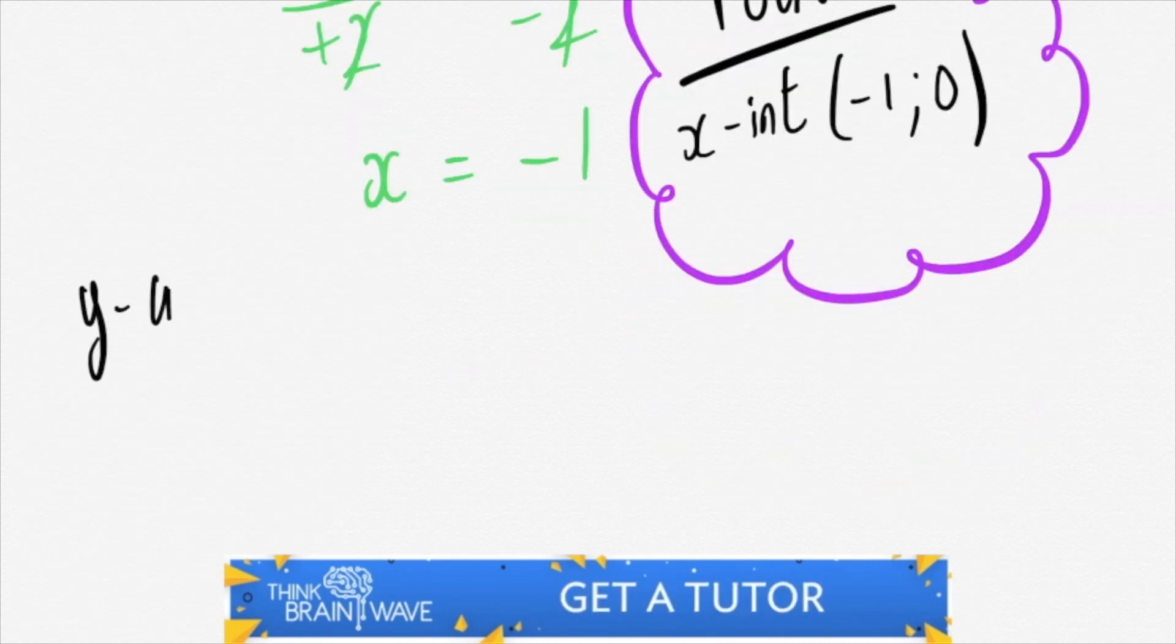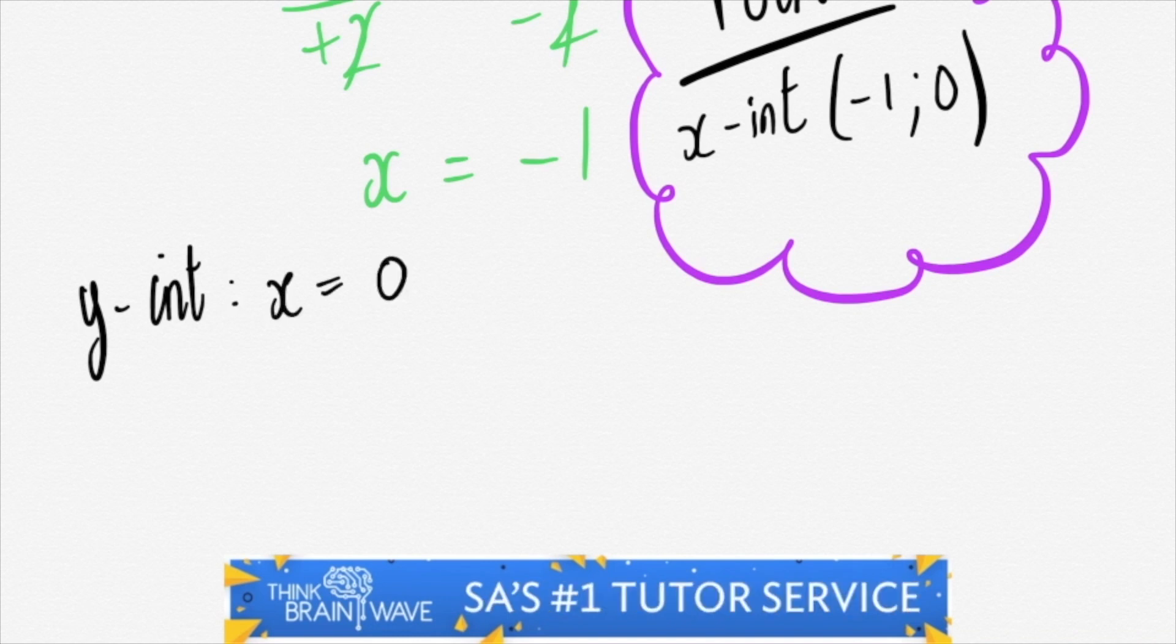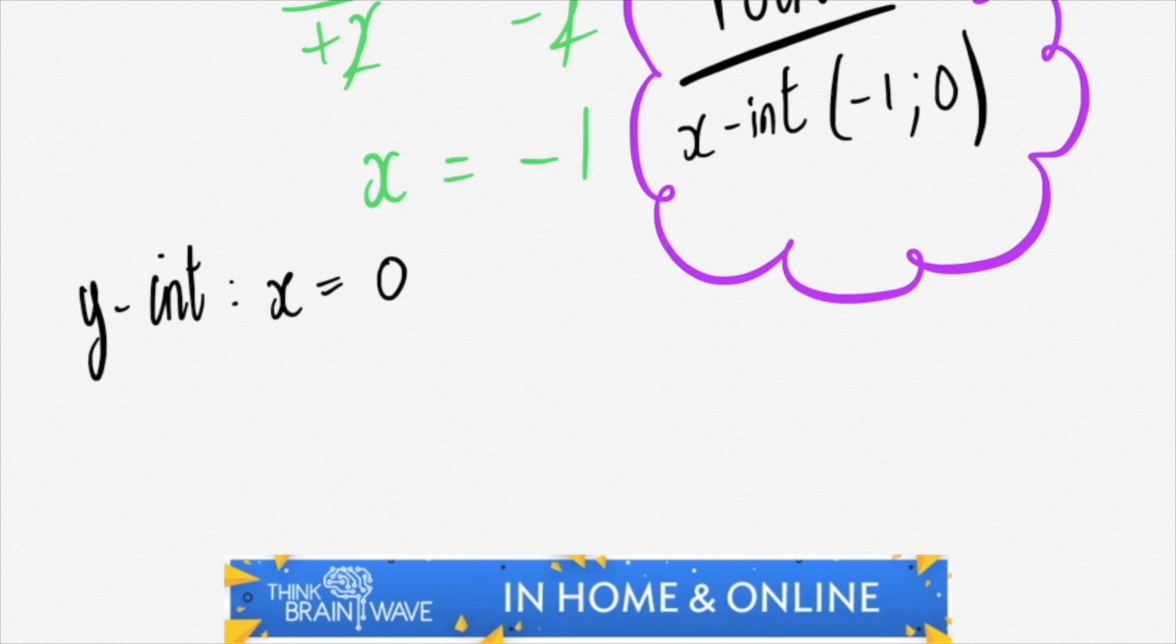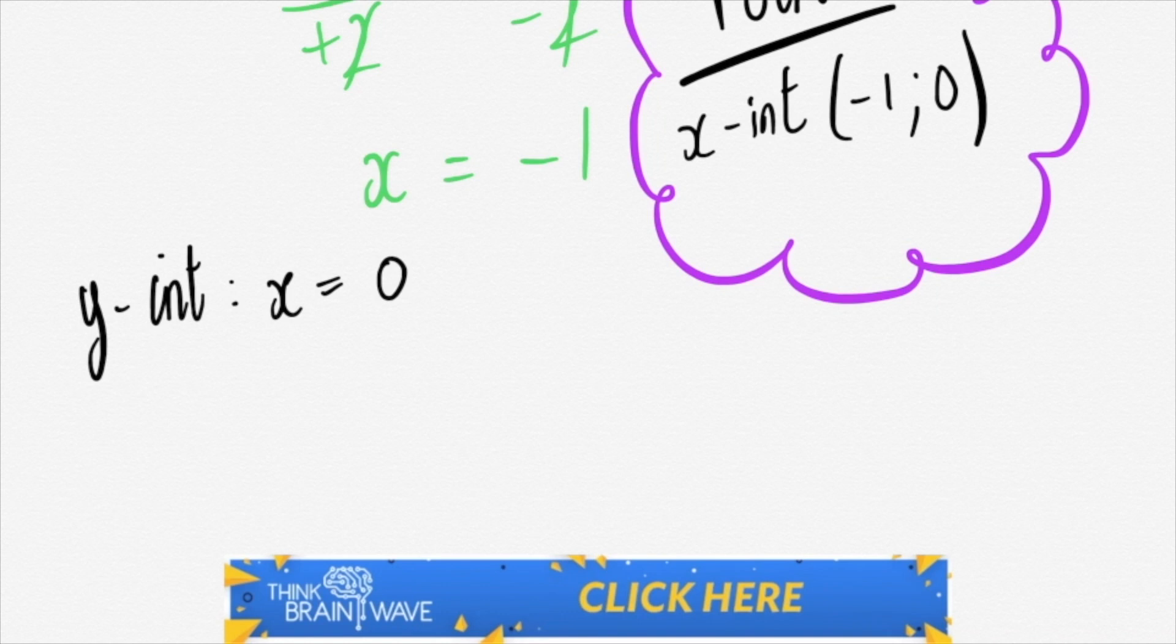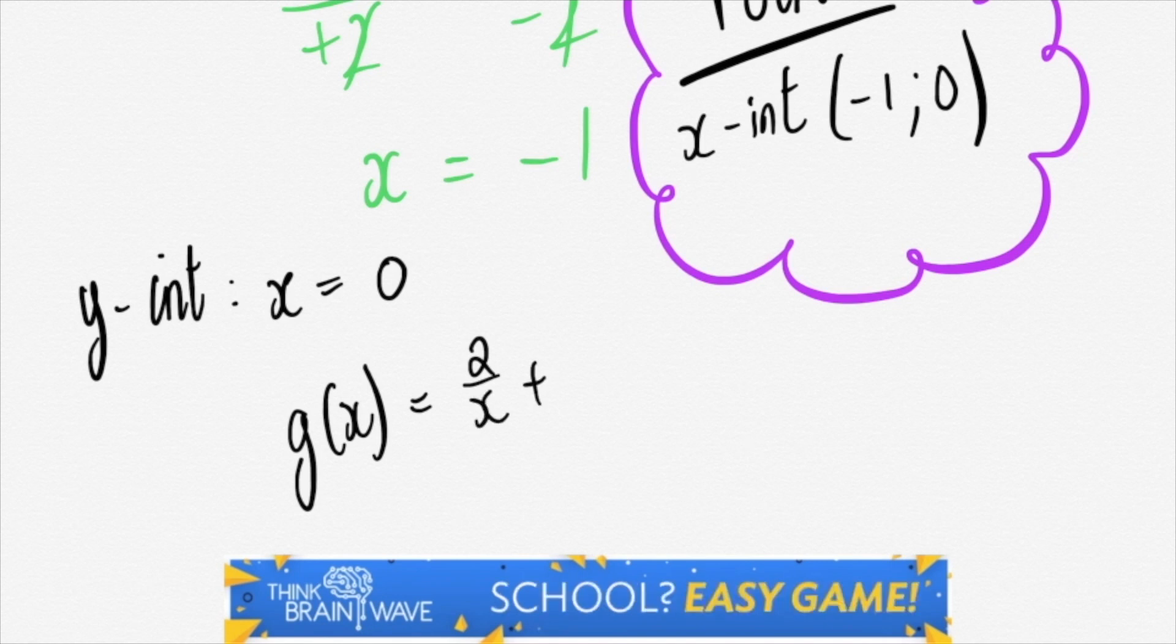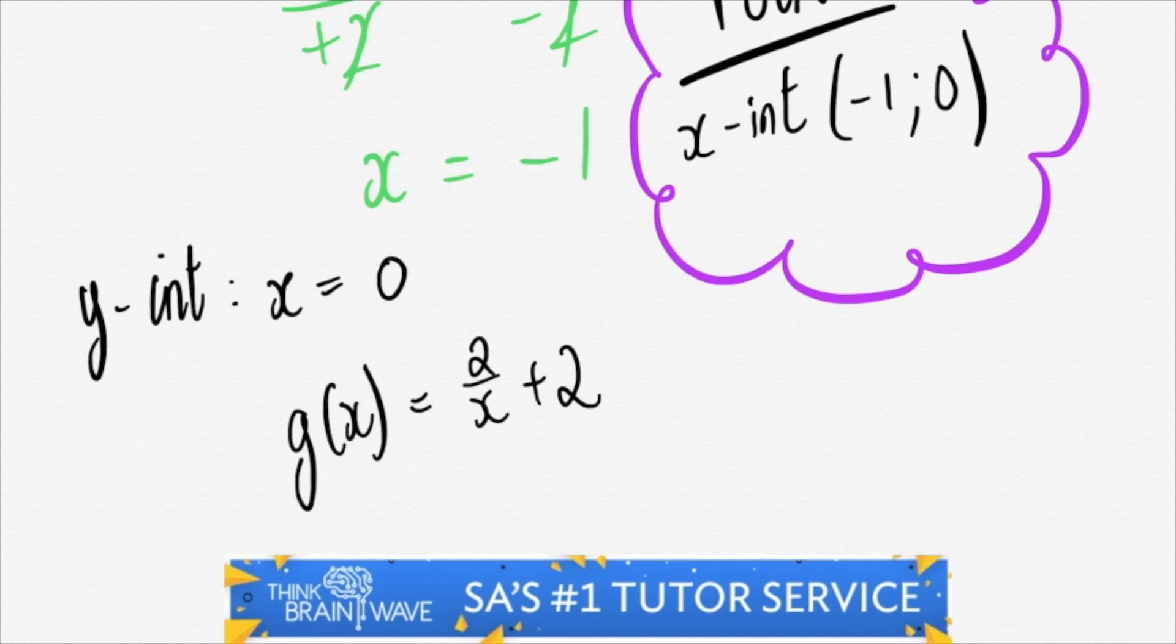Let's do the y-intercepts. In this case, we say x is equal to 0. We simply sub it in. We say g of x or maybe g of 0. So g of x is equal to 2 over x plus 2. Now we say g of 0 is equal to 2 over 0 plus 2.